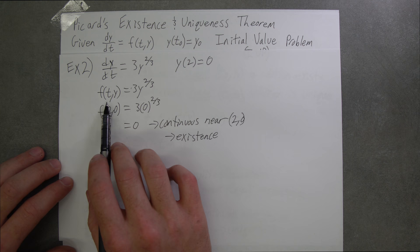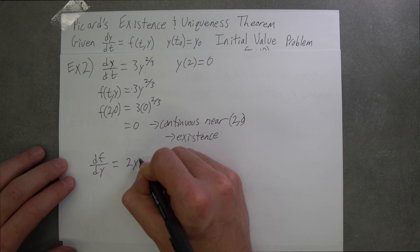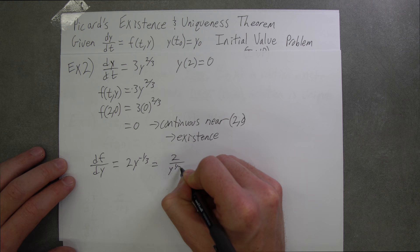Let's take the partial derivative of f with respect to y. Here we find using the power rule that it's equal to 2y to the negative 1/3, or 2 over y to the 1/3.